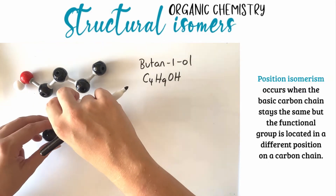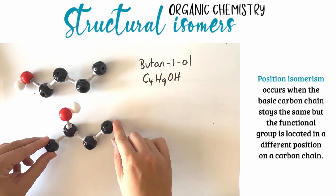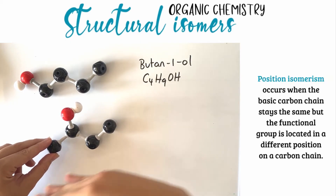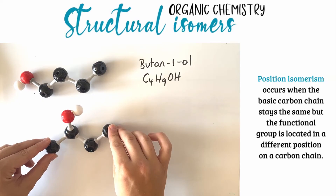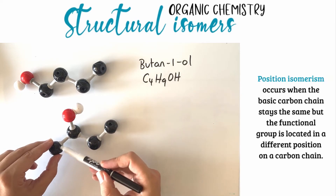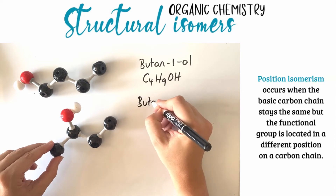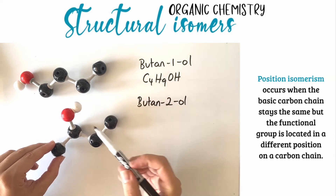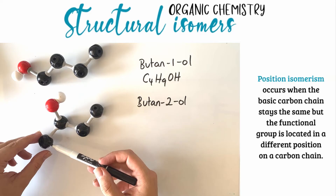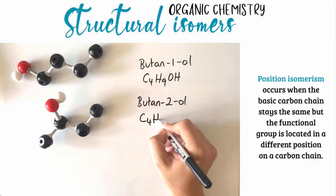Now consider this molecule. This molecule also has a chain of four carbons, but the location of the OH functional group has moved — its position on the chain has changed. This molecule is called butan-2-ol because the position of the functional group is on the second carbon atom. The chemical formula for this molecule is also C4H9OH.